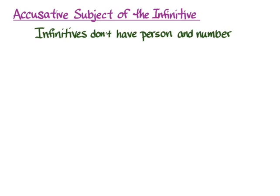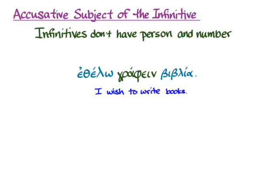You have had infinitives for a long time now, and as you know, infinitives don't have person and number, and you've used them quite often. Sometimes they complete the meaning of another word or another verb. 'Ethelo graphene biblia,' for instance, means 'I wish to write books.' And there is no subject per se of the infinitive graphene — it's completing the idea of what I wish or want to do.